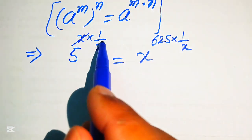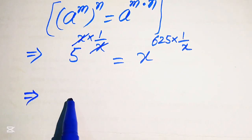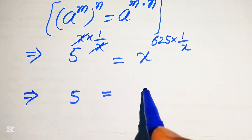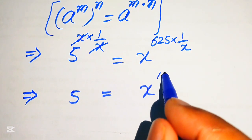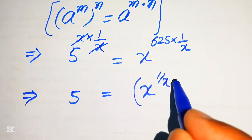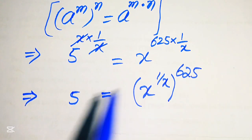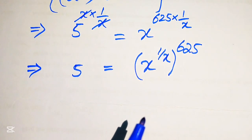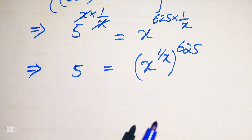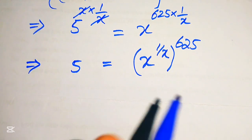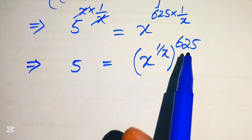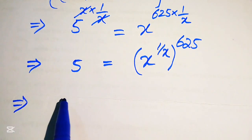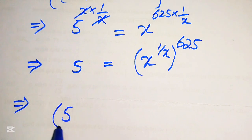Here x cancels with x on the left side, giving us 5. On the right side, moving 1/x inside the term gives x to the power of 1/x, with the whole exponent being 625. So we have 5 equals x to the power of 1/x, all raised to the power of 625. Now we need to move the 625 to the left-hand side by taking the 625th root on both sides.